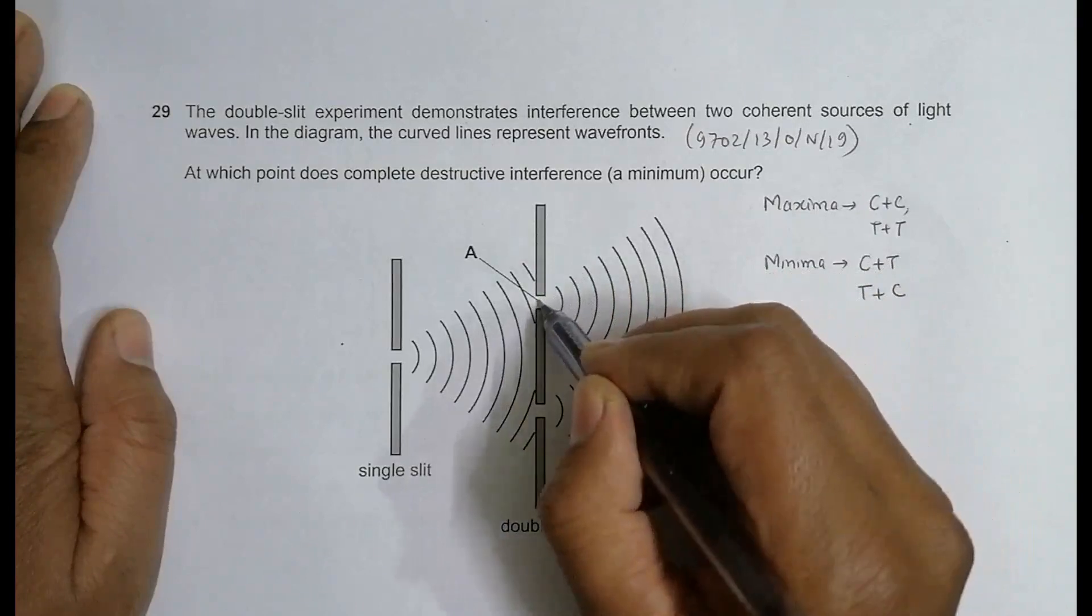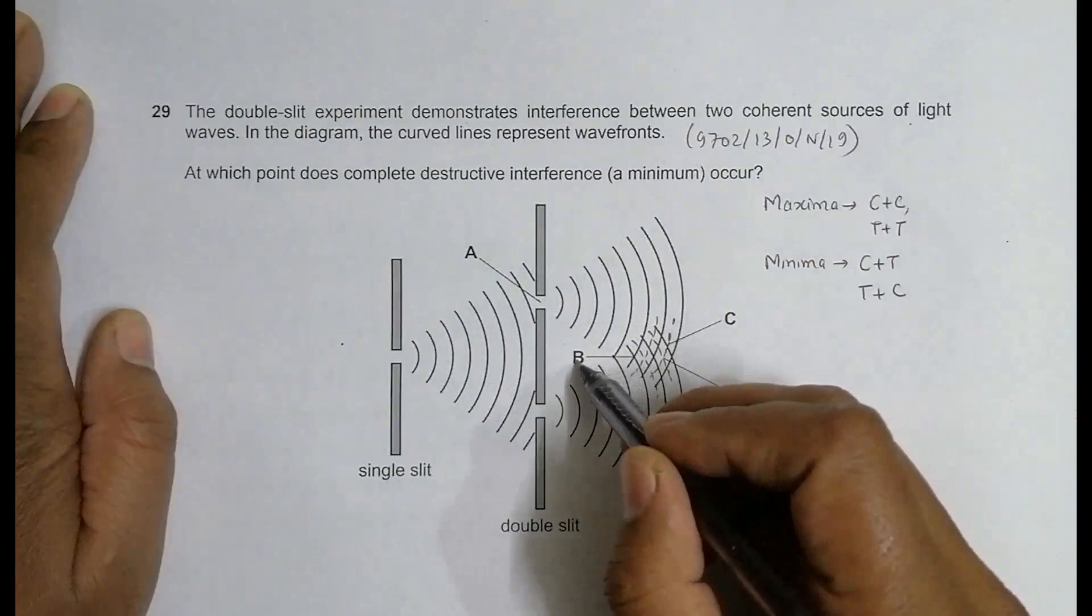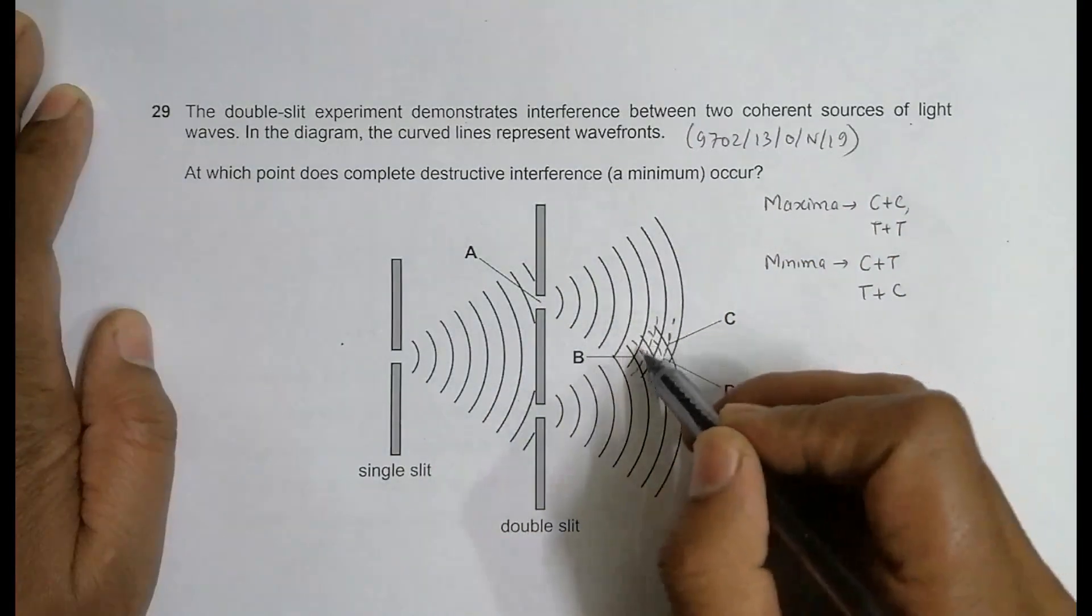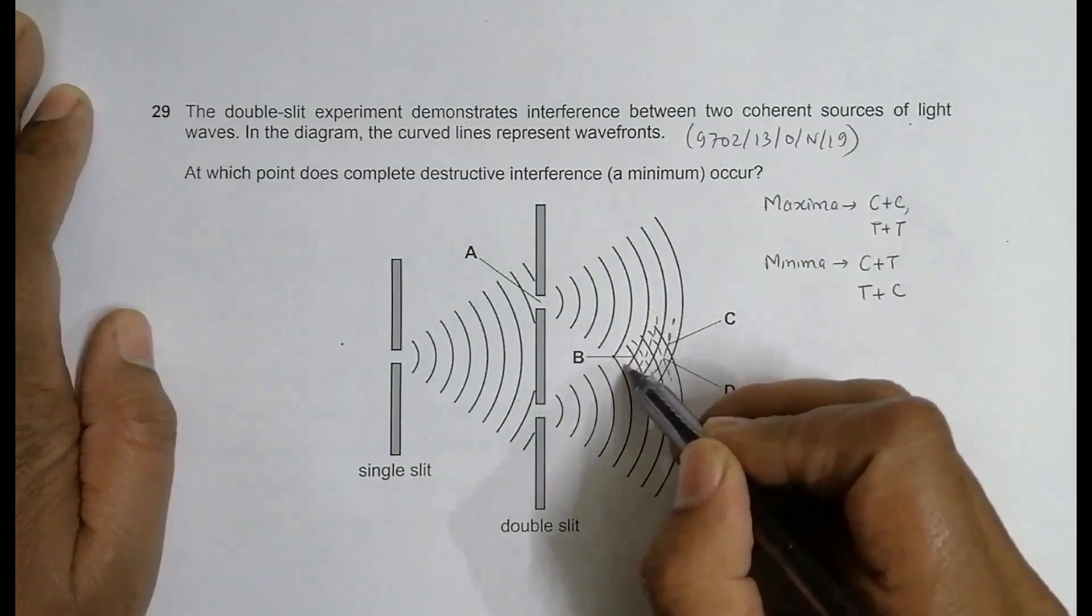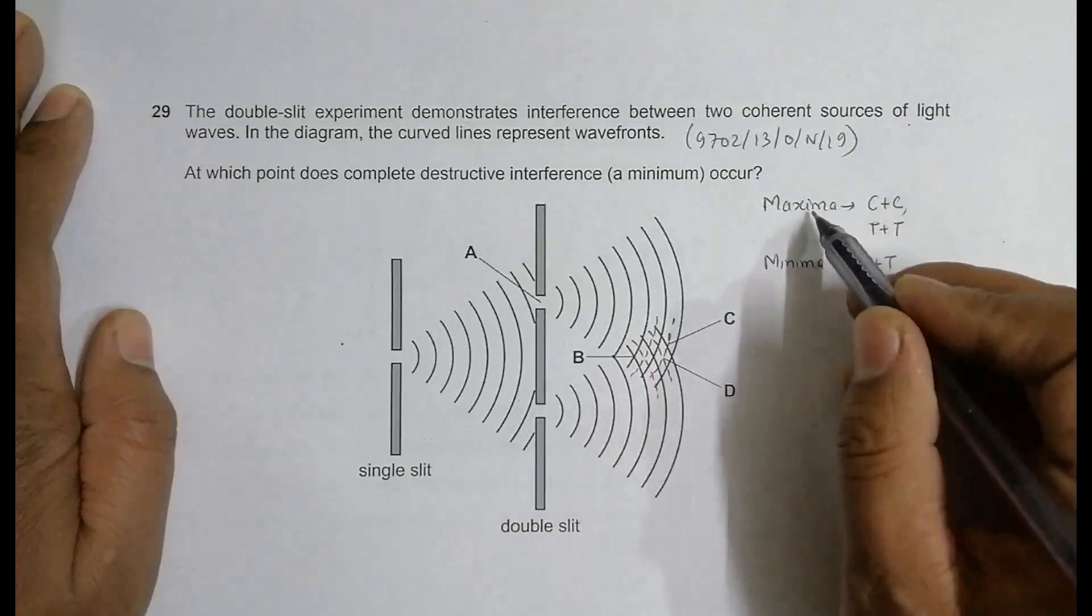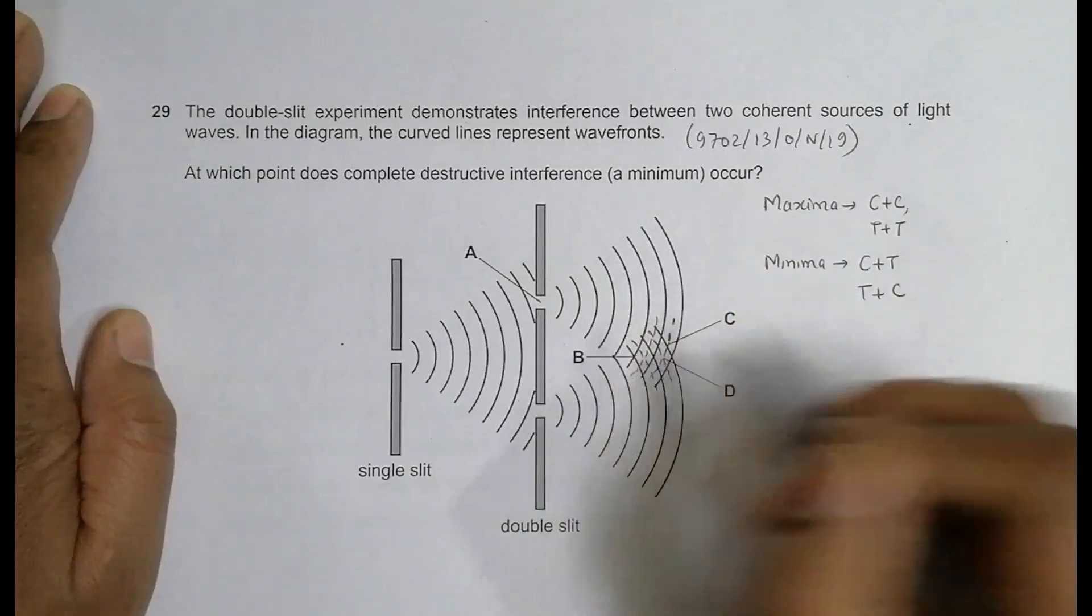A is not the correct choice. Then comes B. B is the point of intersection of crest and crest, so crest and crest should be maxima. Here will be maximum amplitude.